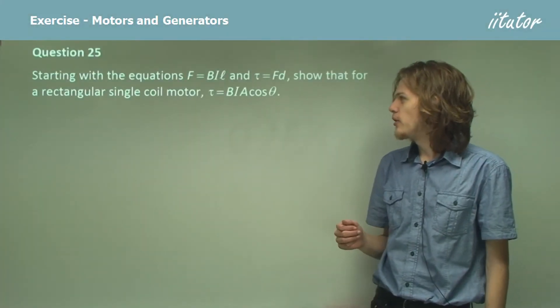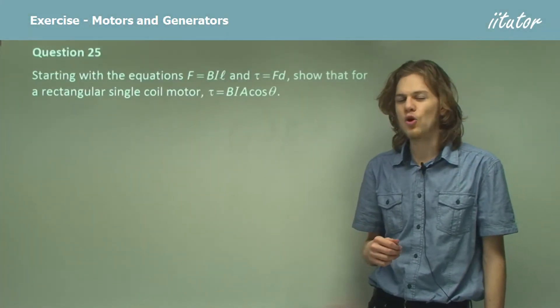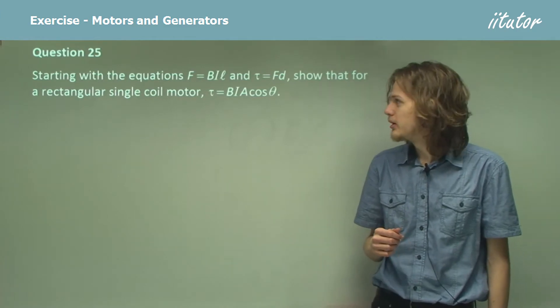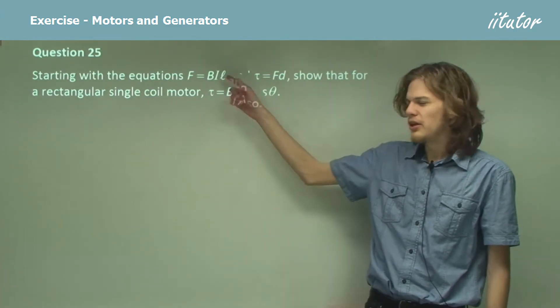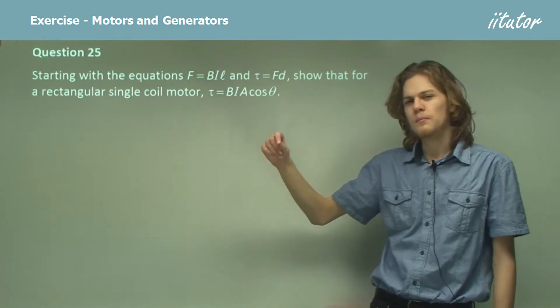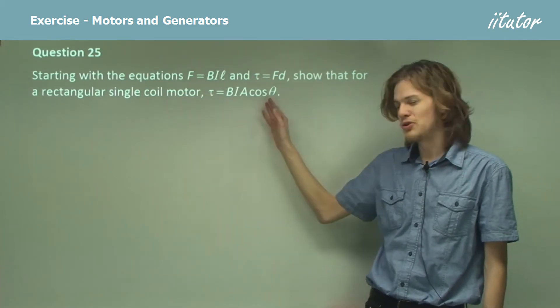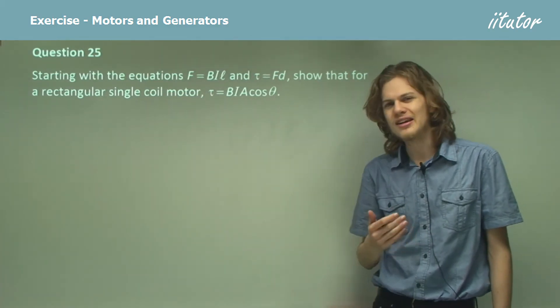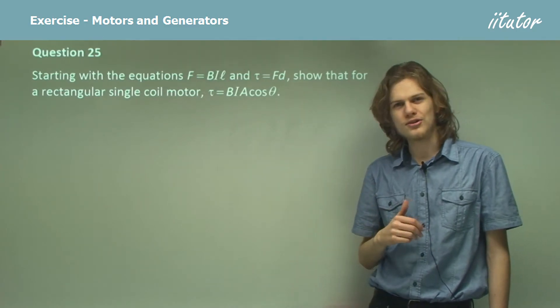Starting with these two equations, show that torque equals BIA cosine theta. So normally there's a sine theta at the end of this equation, but because it would get mixed up with this cosine theta, I've left it out to make it easier. The thetas in each equation are not the same.